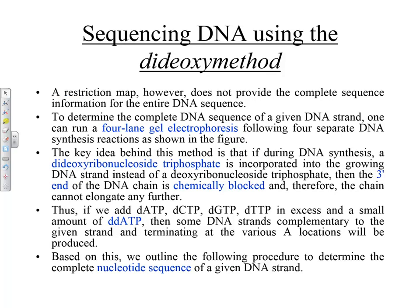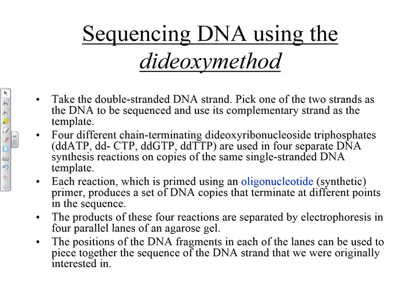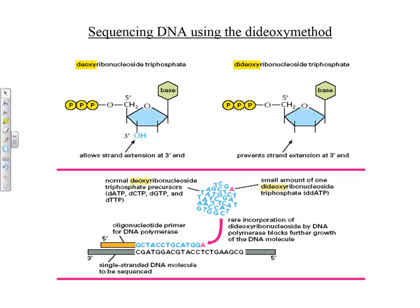A restriction map does not provide the complete sequence information for the entire DNA sequence. To determine the complete DNA sequence of a given DNA strand, one can run a four-lane gel electrophoresis following four separate DNA synthesis reactions. The concept is quite easy to explain. What Charlie is doing in his lab — Dr. Johnson — is what is called next-generation sequencing, which is a step above this. But first, what are we doing in regular sequencing?